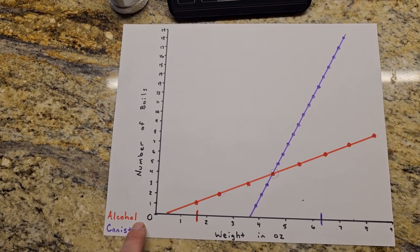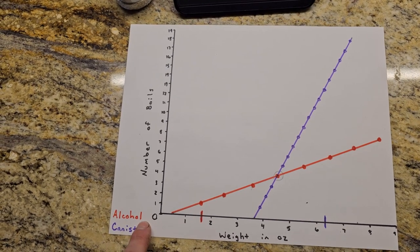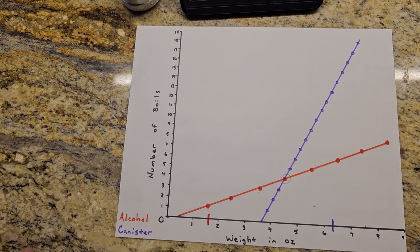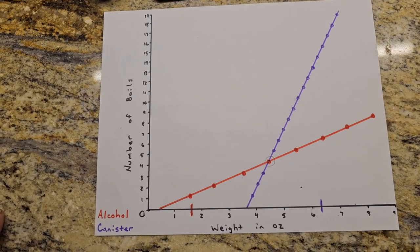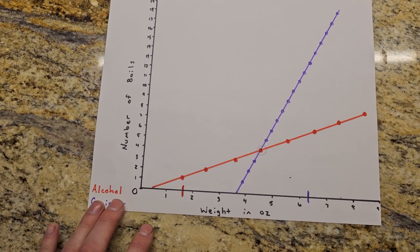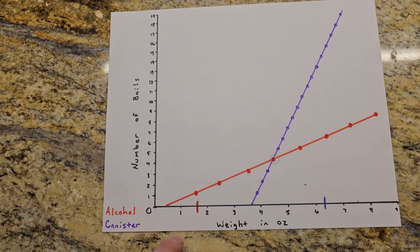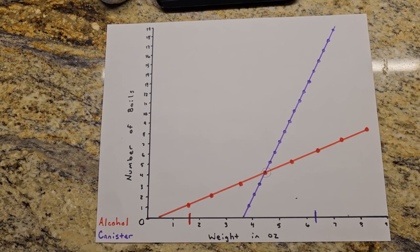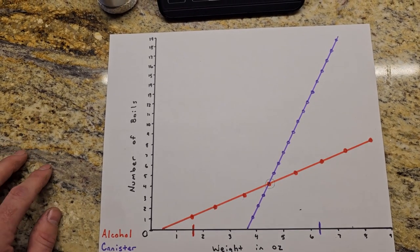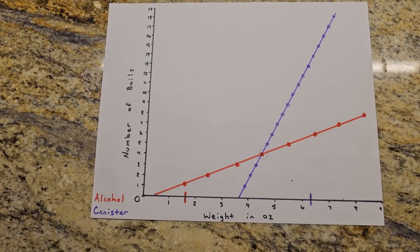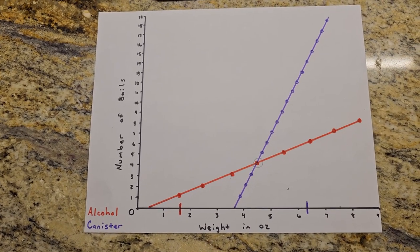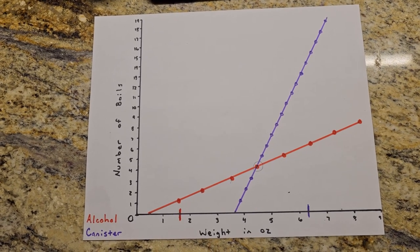That's not always consistent. Depends on the wind, depends on the water temperature, all sorts of factors go into it. But just for sake of making this easy we're going to say one ounce of alcohol fuel goes into one boil. That's one fluid ounce which isn't exactly one weight in ounces but it's pretty close as well.